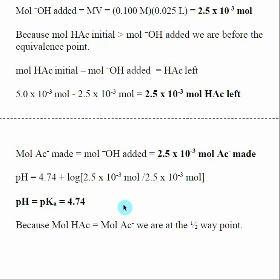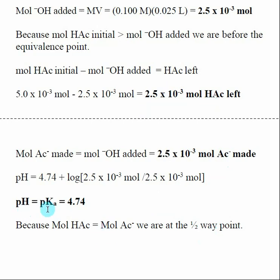This is true for the halfway point of any weak acid/strong base titration curve. We are at the halfway point because the moles of weak acid remaining equals the moles of conjugate base made — we've converted exactly half of our weak acid into conjugate base. At the halfway point of a weak acid/strong base titration, the pH is equal to the pKa of the acid.